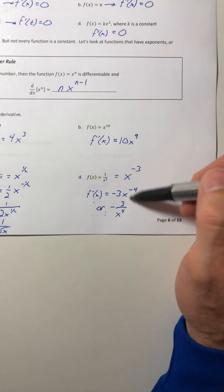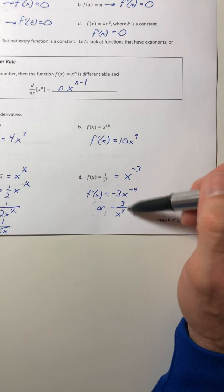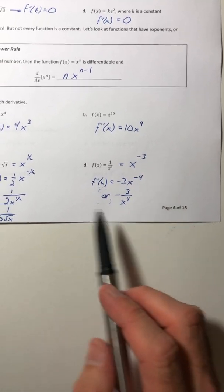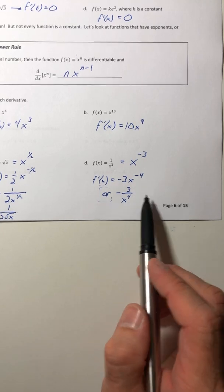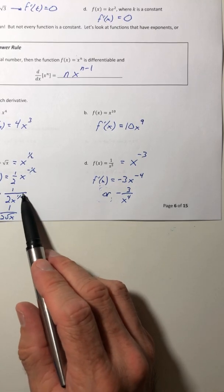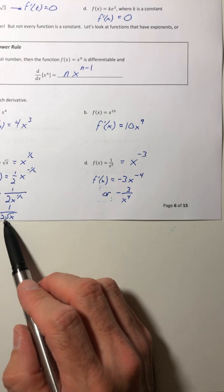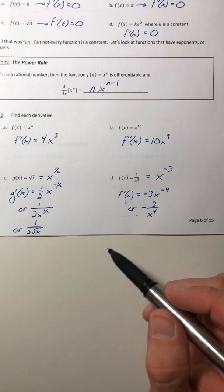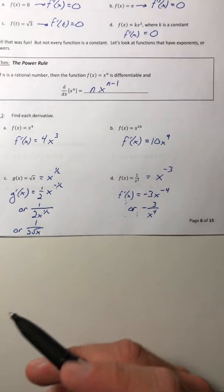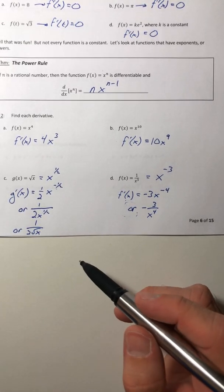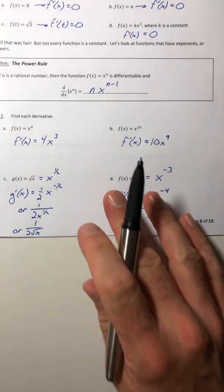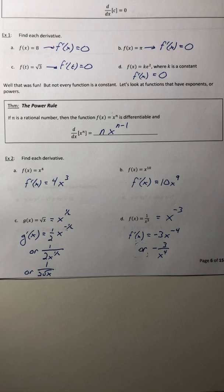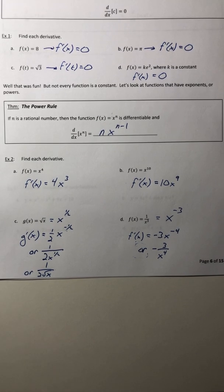But again, be aware that you can go back and forth. So, the book, what it likes to do is it kind of likes to write everything with positive exponents. And it doesn't like to leave fractional exponents. So, it changes it back into radicals. Typically, that's kind of what I usually go for, too. But it doesn't mean you have to. Just as long as it's simplified, you're usually pretty good to go. Okay. So, let's stop this video here. And we'll continue with some other basic rules.